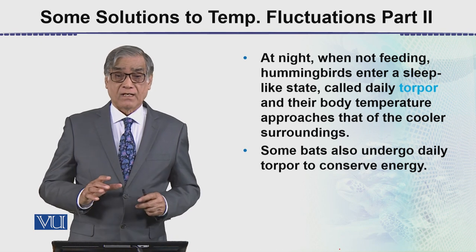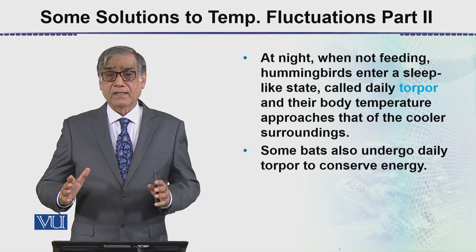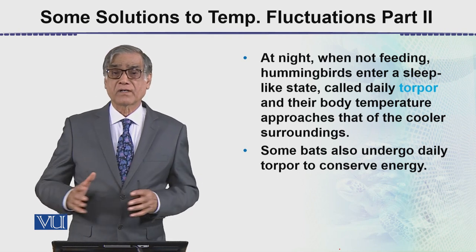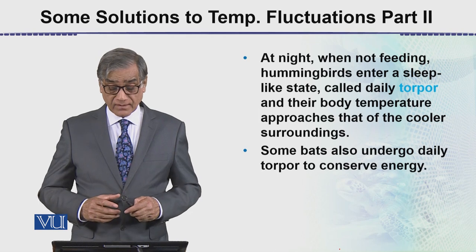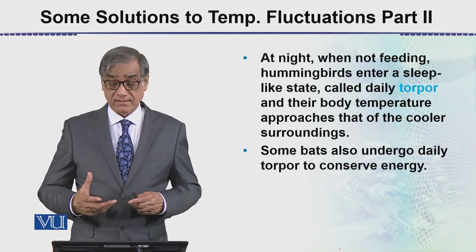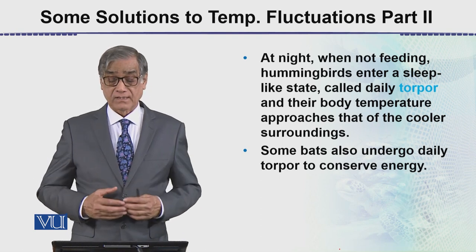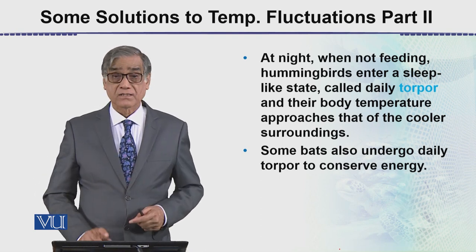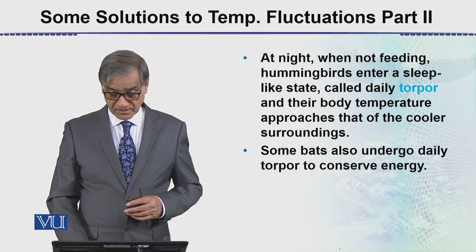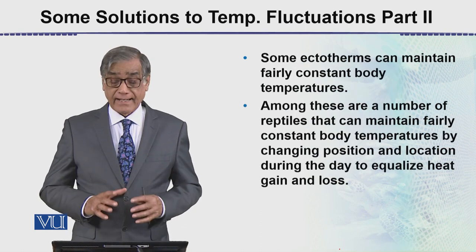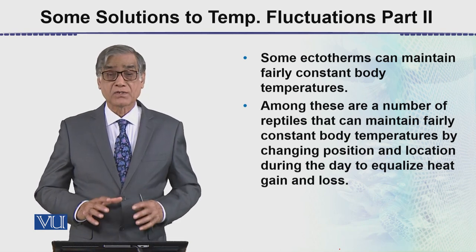In torpor, the body temperature fluctuates greatly between day and night. Some bats also undergo this daily fluctuation of temperature — torpor — which is a mechanism for energy conservation.